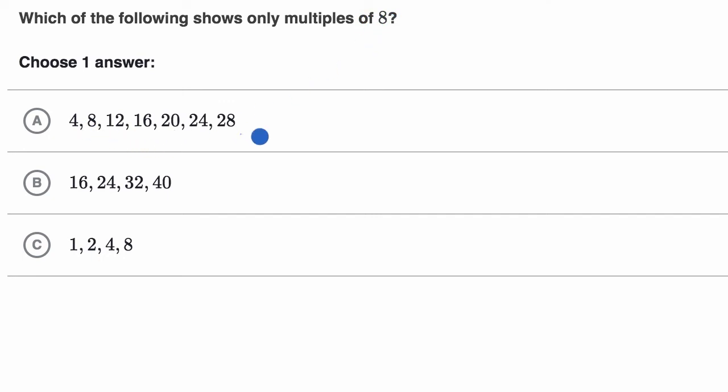All right, well, I could do it choice by choice here. So let's see, this first one, is four a multiple of eight? Well, four can divide into eight. We could say that eight is a multiple of four, but four is not a multiple of eight. What whole number am I going to multiply eight by to get to four? So we can rule this out.